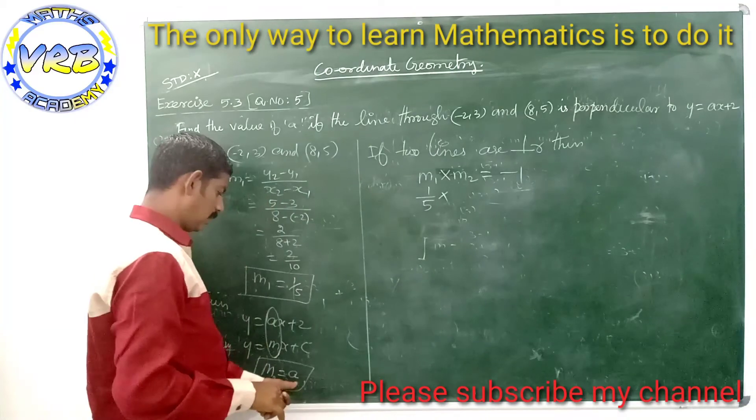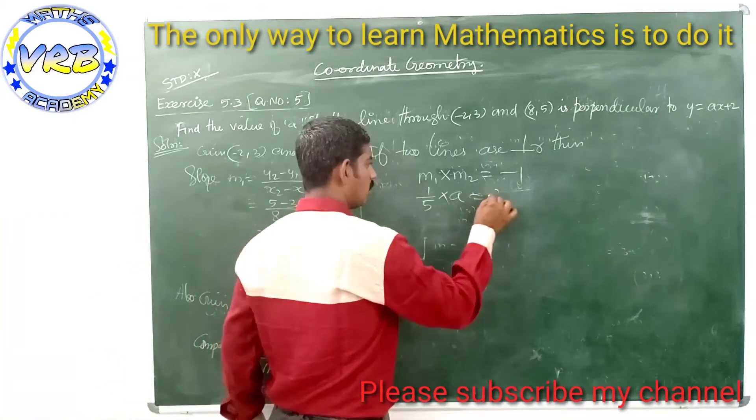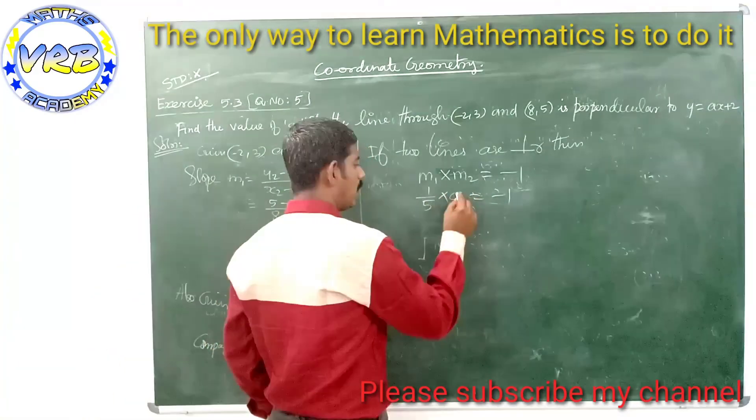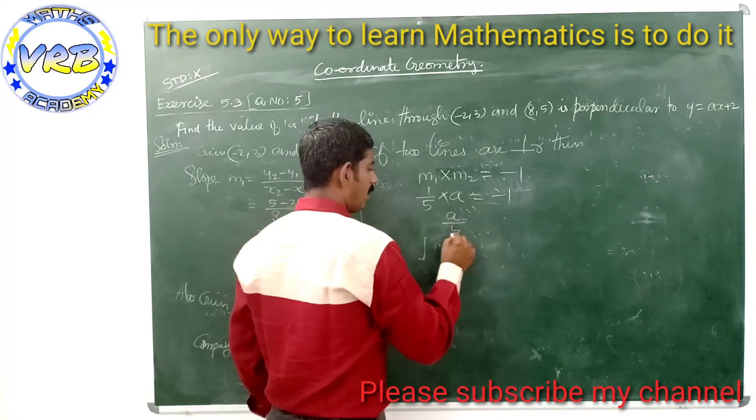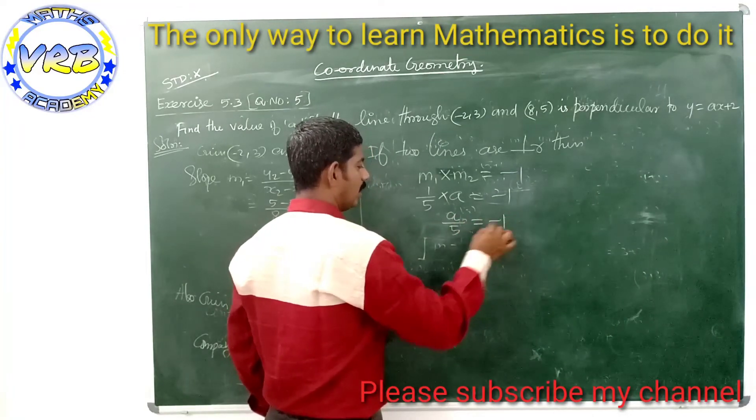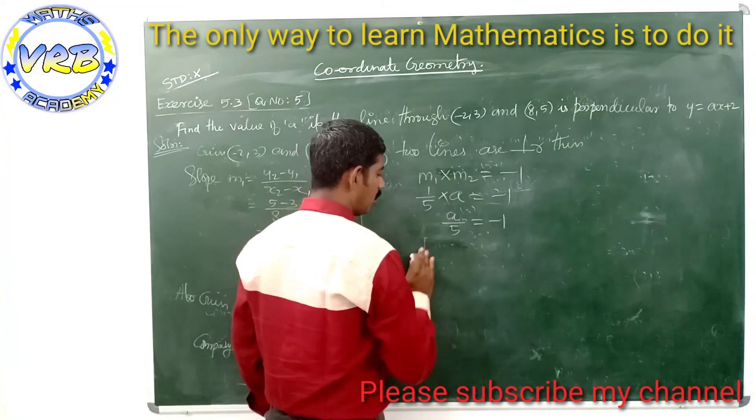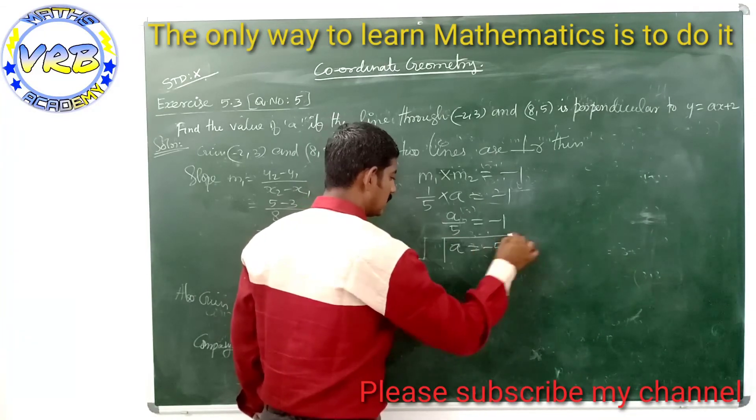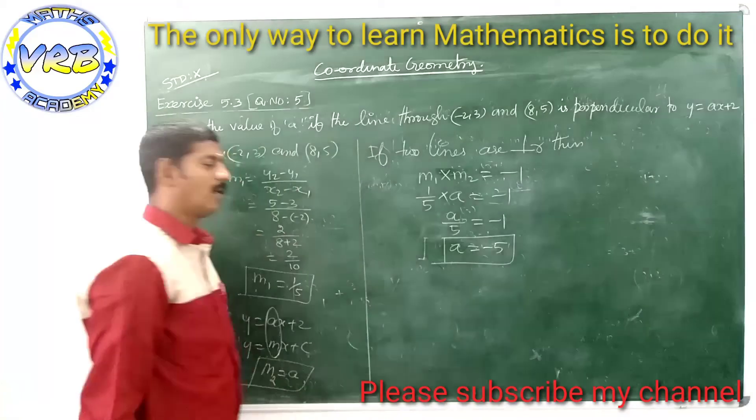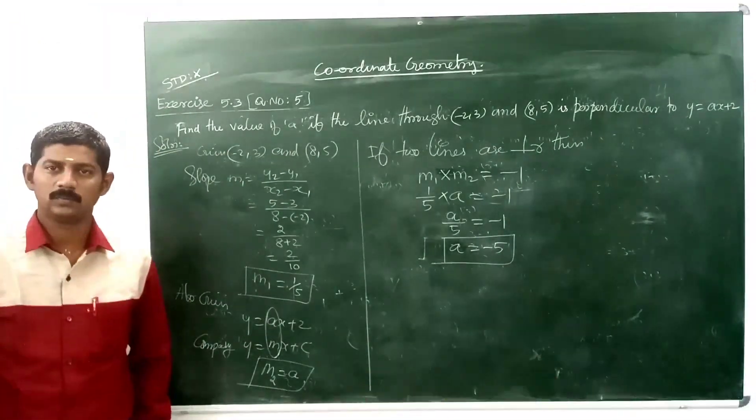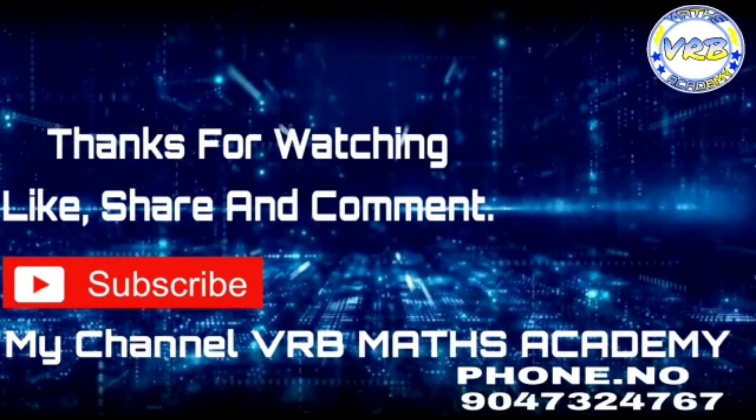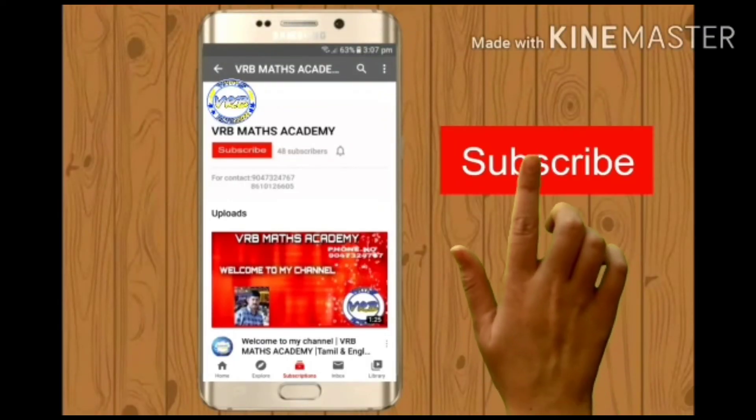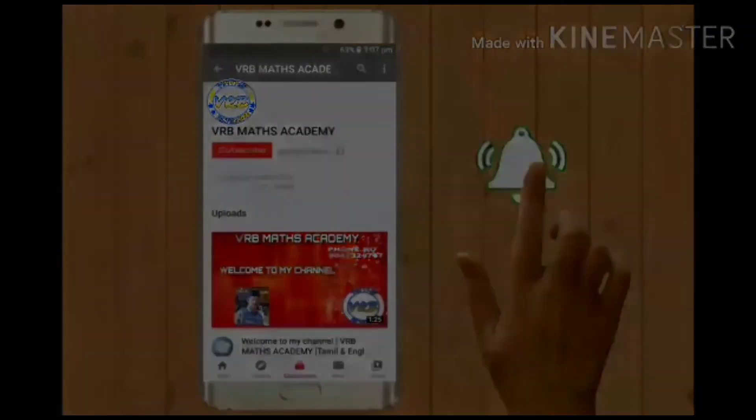So 1/5 × a = -1, which gives us the value of a = -5. That's all, thank you. Please subscribe my channel and press the bell icon.